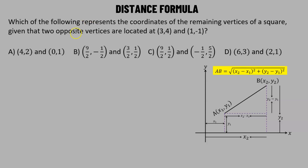In this problem, it's given that which of the following options represents the coordinates of the remaining vertices of a square, given the two opposite vertices which are located at the coordinates (3, 4) and (1, -1).